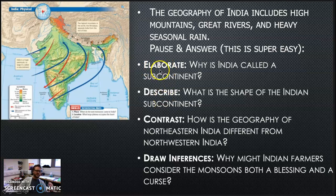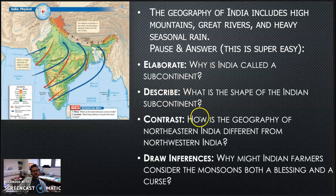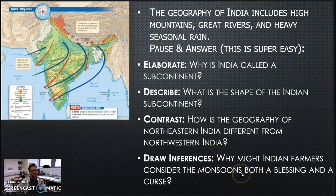But elaborate — we're looking at four skills here. Elaborate: Why is India called a subcontinent? Describe: What is the shape of the Indian subcontinent? Contrast: How is the geography of northeastern India different from northwestern India? Don't overthink this. And then draw inferences: Why might Indian farmers consider the monsoons both a blessing and a curse? We will get to that last one later on. Take a second right now, pause your video, and jot down what you think the answers to these questions are.